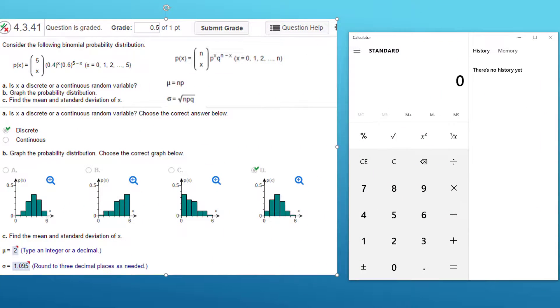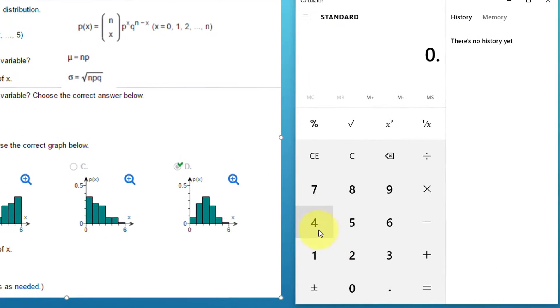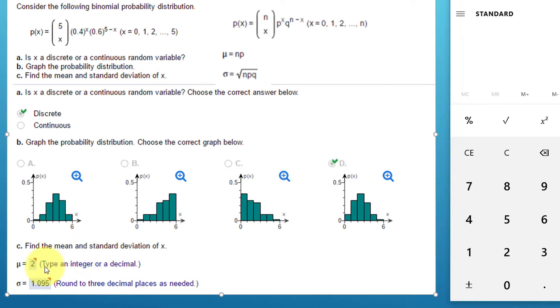Okay, the last part of the question is to find the mean and standard deviation of x. And remember, we've got the mean is just n p. So I brought up the Windows calculator here. And I'm just going to put in 0.4, which is our p, times n of 5 equals 2 would be our mean, which is the answer they have here.